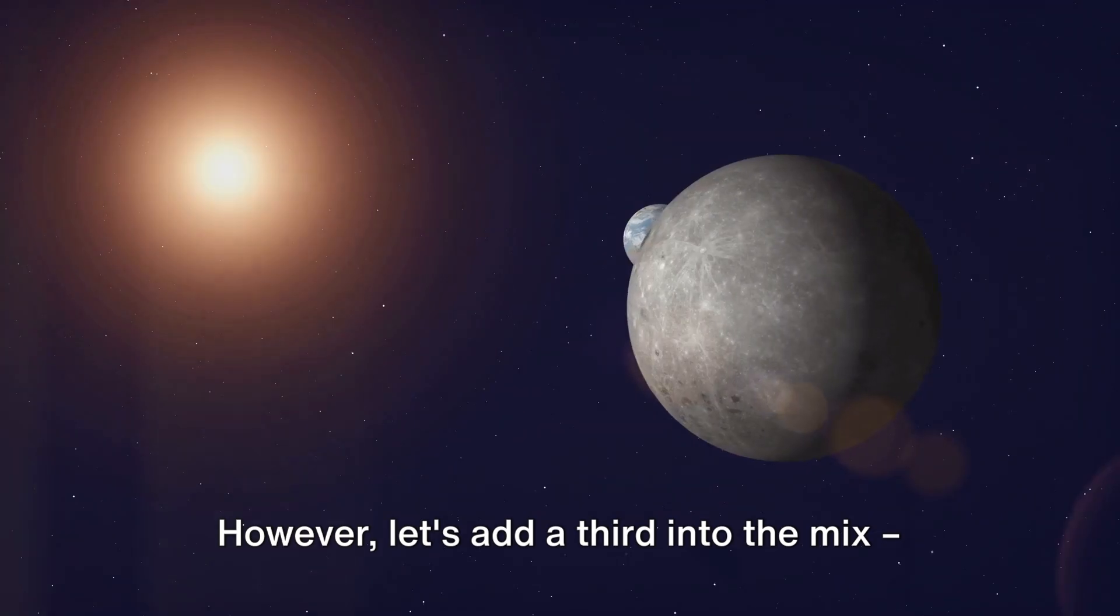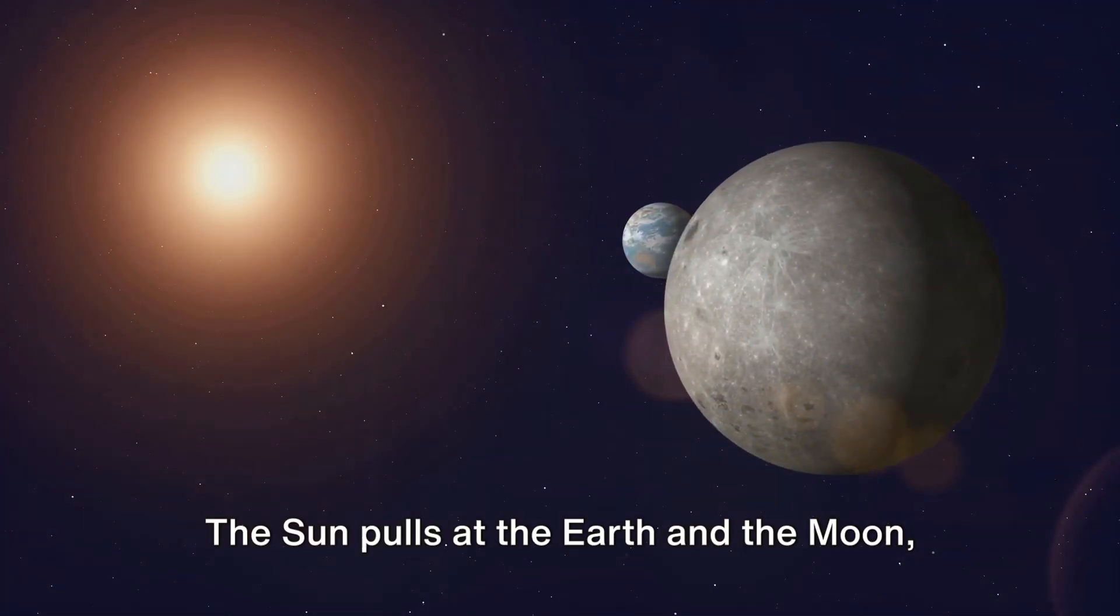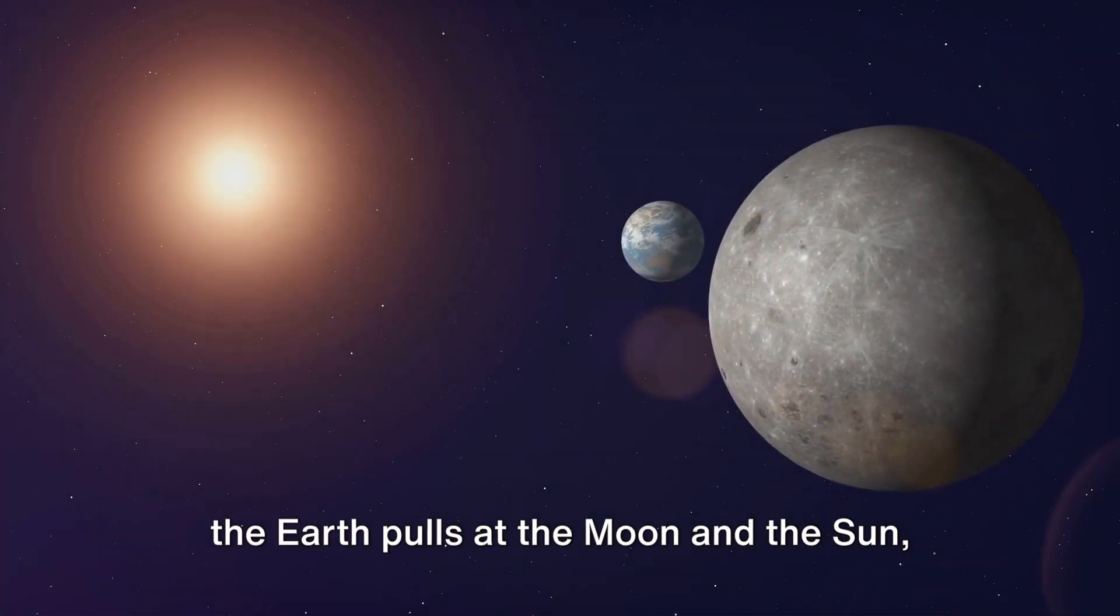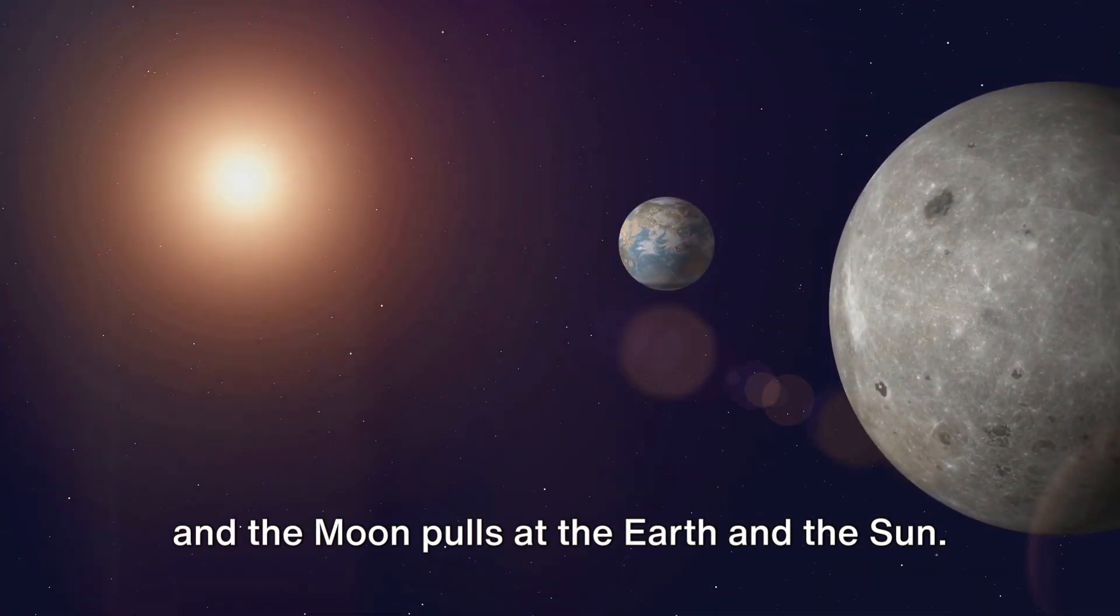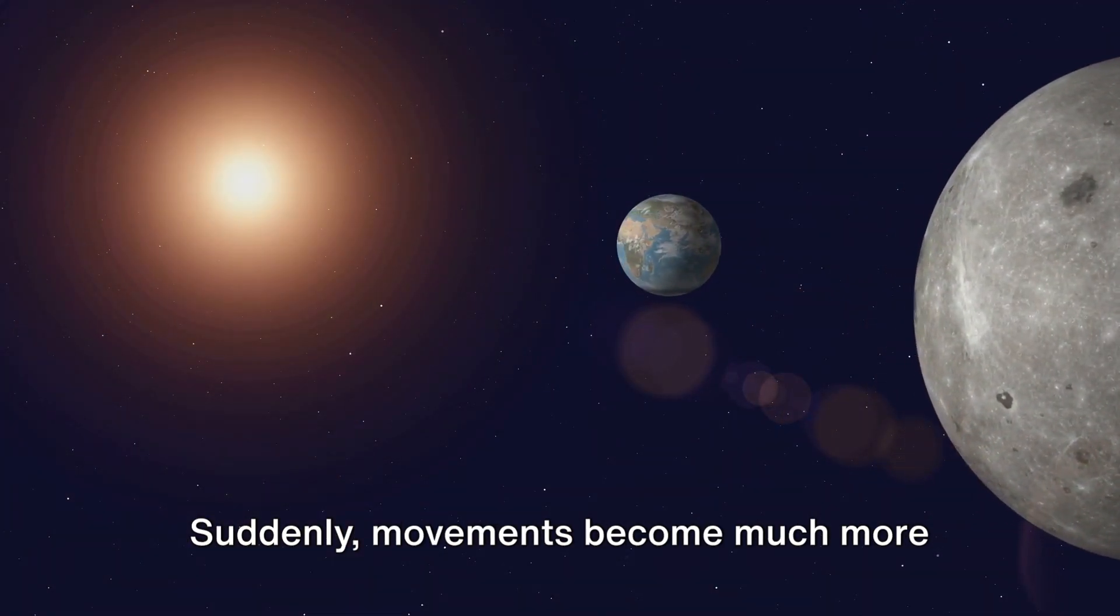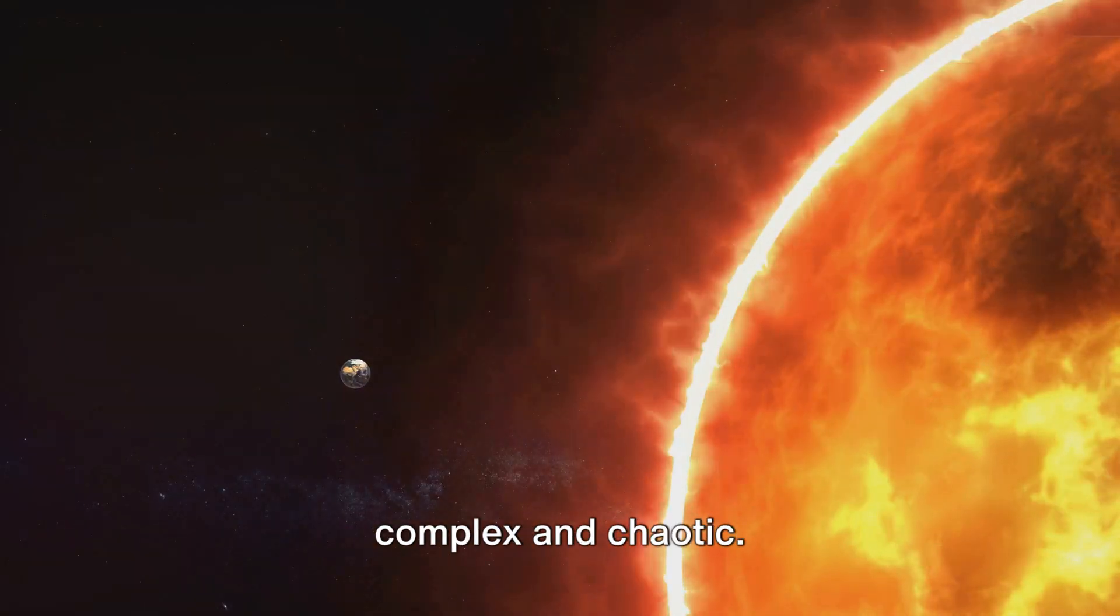However, let's add a third into the mix, the Sun. The Sun pulls at the Earth and the Moon, the Earth pulls at the Moon and the Sun, and the Moon pulls at the Earth and the Sun. Suddenly, movements become much more complex and chaotic.